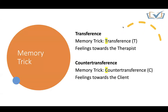Here's a quick memory trick to help you remember the difference between transference and counter-transference. The word transference starts with the letter T — T is for therapist, meaning feelings towards the therapist. Counter-transference starts with C — C is for client, meaning feelings towards the client. So transference means the client has feelings towards the therapist.